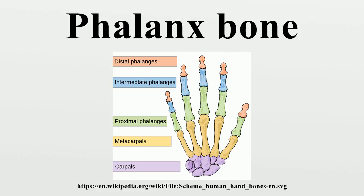It tapers downwards. The proximal extremities of the bones of the first row present oval concave articular surfaces, broader from side to side than from front to back. The proximal extremity of each of the bones of the second and third rows presents a double concavity separated by a median ridge. The distal extremities are smaller than the proximal, and each ends in two condyla separated by a shallow groove. The articular surface extends farther on the palmar than on the dorsal surface, a condition best marked in the bones of the first row.